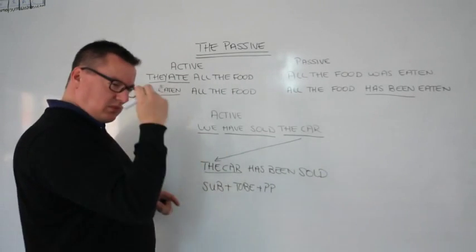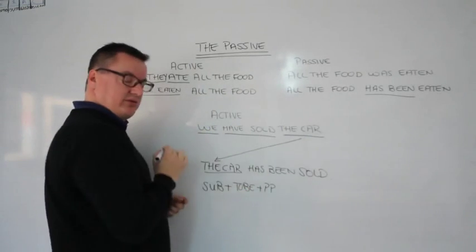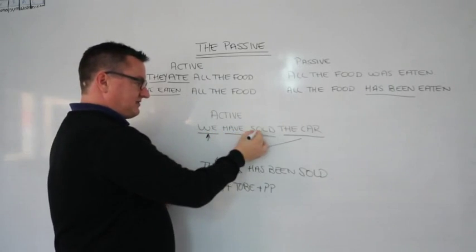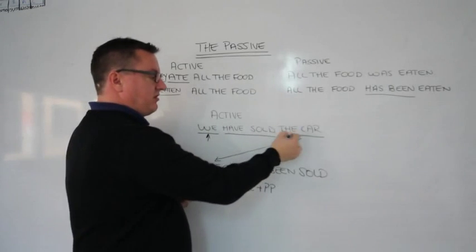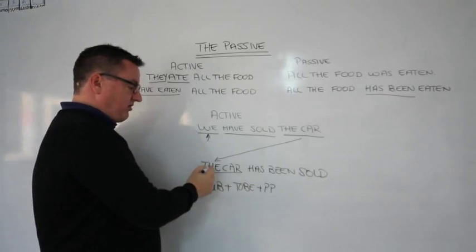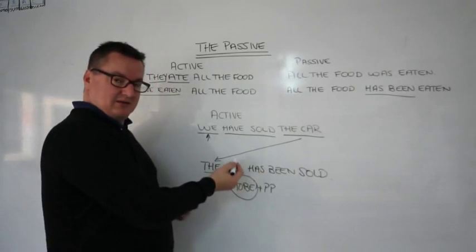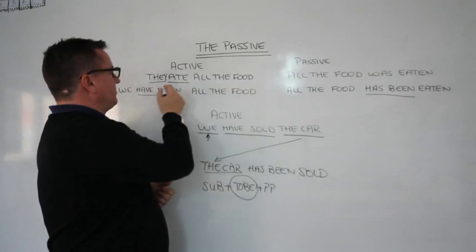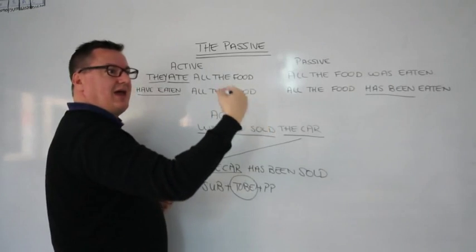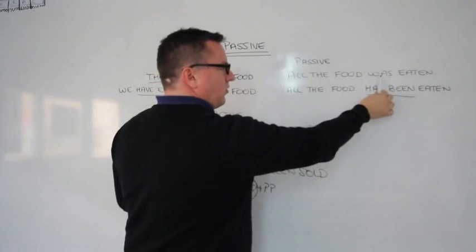Things to remember: when you see an active sentence and you've got to transfer it into a passive sentence, you've got to think of three things. First, the subject — who. 'Have sold' — present perfect. The car — the object. The object comes down to be the subject, always. Then you need to always put the verb 'to be' into the tense that it was. For example: 'They ate all the food' — 'ate' is in past simple, so you need to add the past simple into this sentence — 'All the food was eaten.'